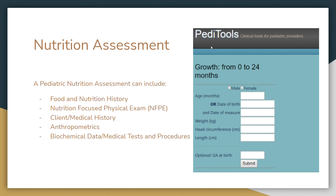There's a great tool called PETA tools for pediatric dietitians. You can enter weight, height, and head circumference — all anthropometric measurements — to see if a child is growing appropriately. This uses z-scores or standard deviation to do that. Biochemical and medical tests are often blood or urine tests that determine whether a child has enough nutrients or micronutrients.